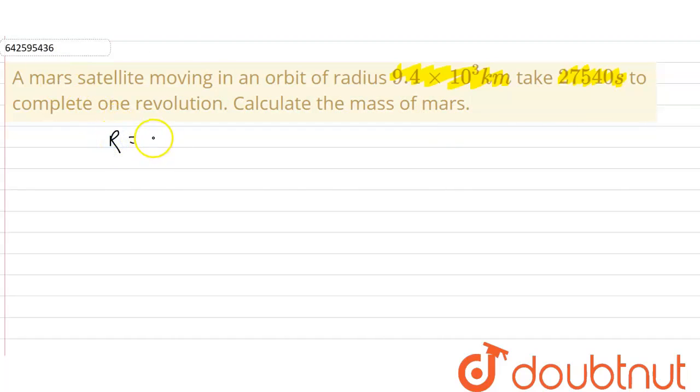...as 9.4 × 10³ kilometers, or what we can say is 9.4 × 10⁶ meters, correct. It takes the time of 27,540 seconds. We have to calculate the mass of Mars, okay.